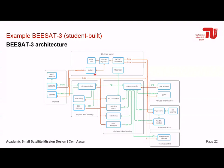Here's an overview of the BEESAT-3 architecture: electrical power with solar cells, converters, battery, and charge regulators; the payload — an S-band transceiver with antenna and a camera; payload data handling via a simple microcontroller with data memory; onboard data handling controlling the satellite and processing sensor data; attitude determination using sun sensors and gyros; and UHF communication for telemetry and command. Relatively simple compared to more complex architectures, but still a very good starting point.